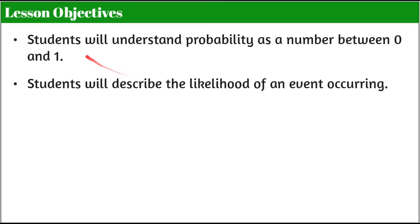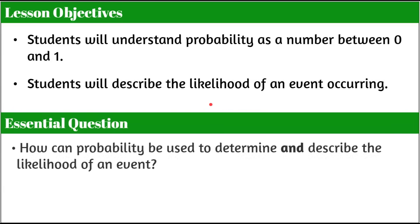Here we have our objectives today. There are two. You, the student, will understand probability as a number between 0 and 1. You will also be able to describe the likelihood of an event occurring. Our guiding question to think about as I go through the lesson: how can probability be used to determine and describe the likelihood of an event?